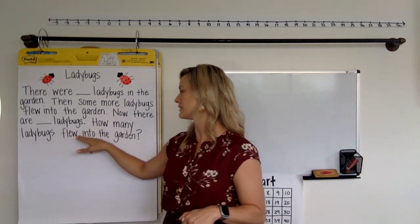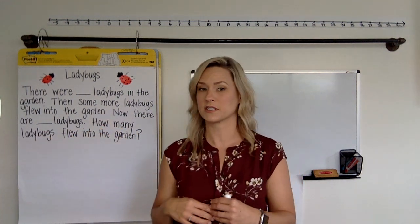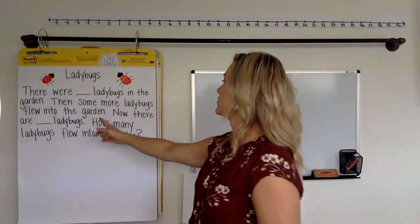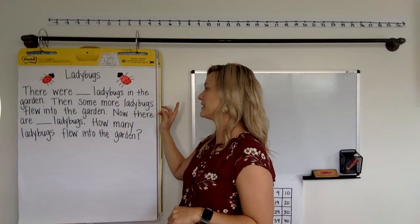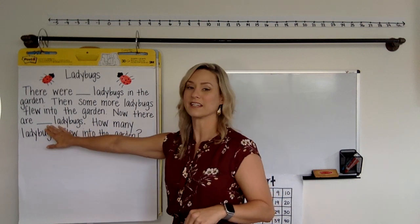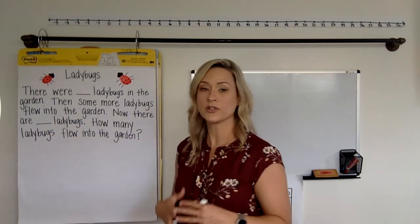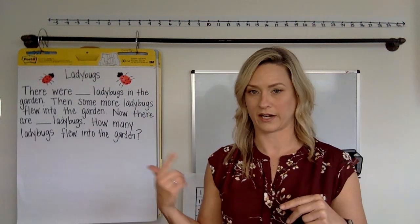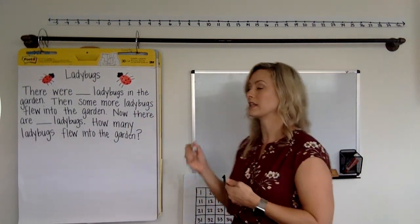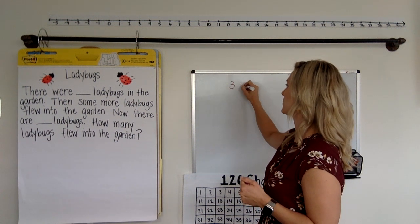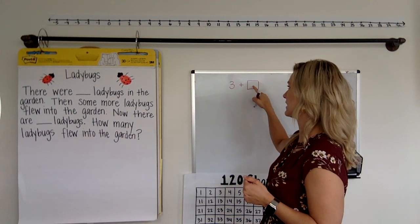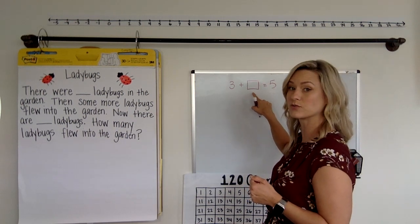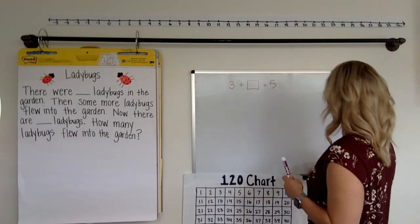So notice we have some ladybugs to start. We are going to find out what our ending number is, but we don't know that change. The change is how many flew into the garden in the second round, right? So we're doing the same kind of problem like we did earlier. That 3 plus what number, that's what we're looking for, equals 5. And we found out the change was 2. Well, in this case, I'm going to give your kids a set of numbers.